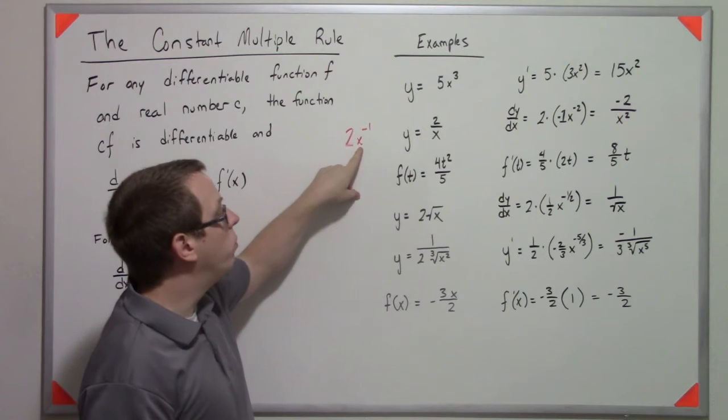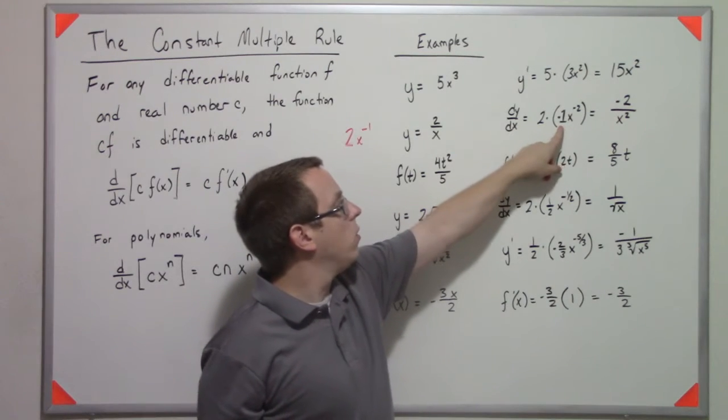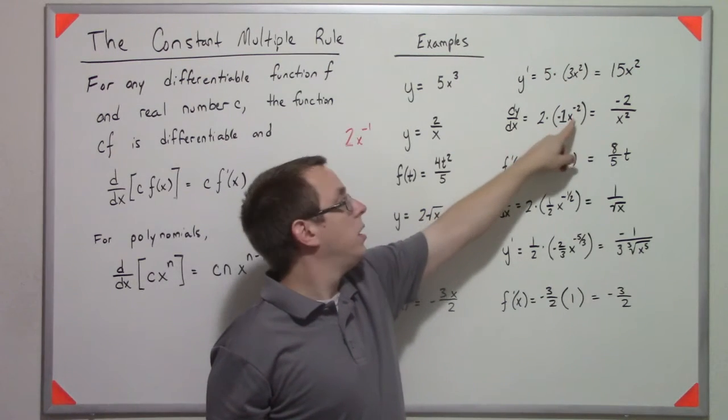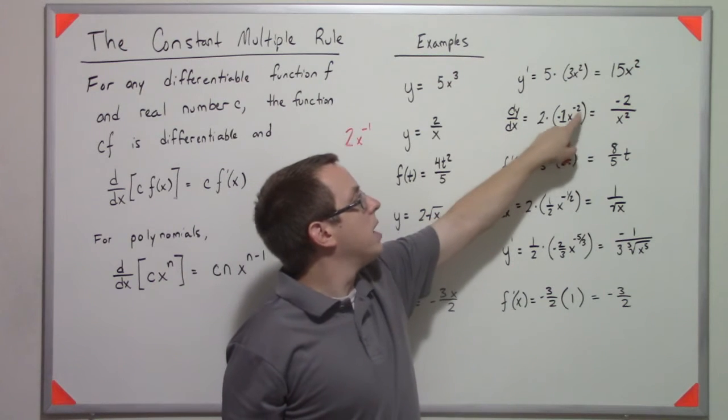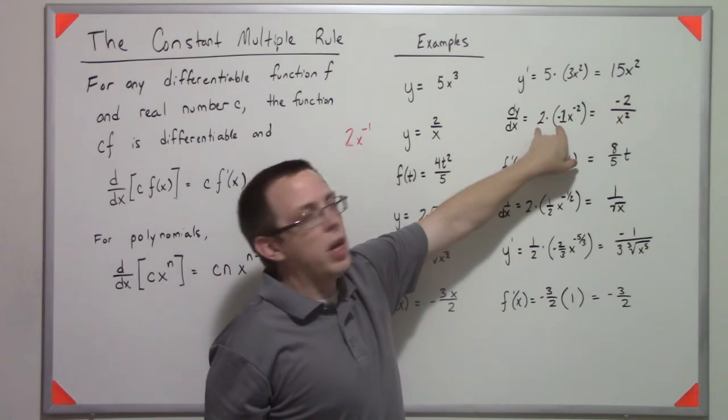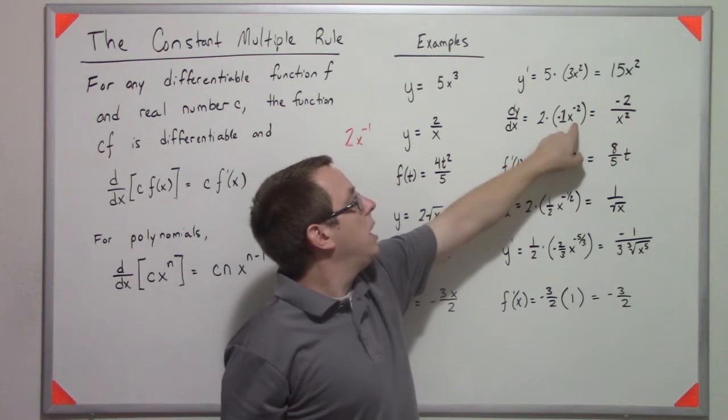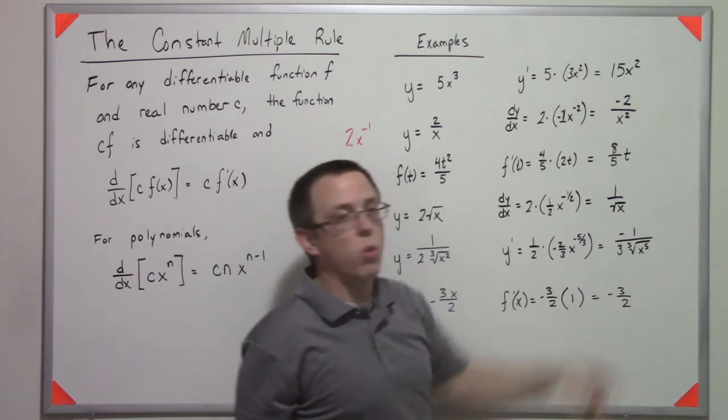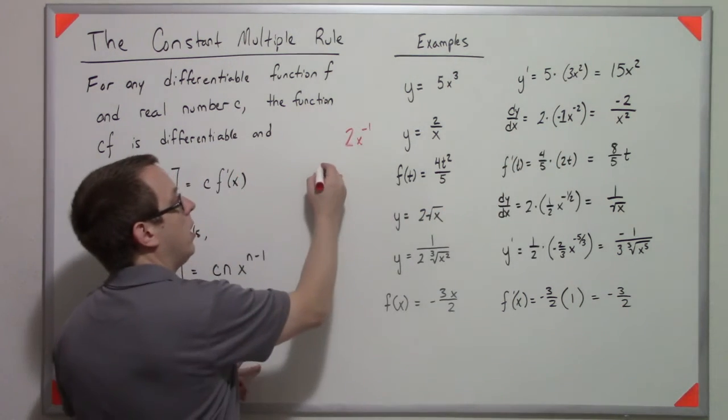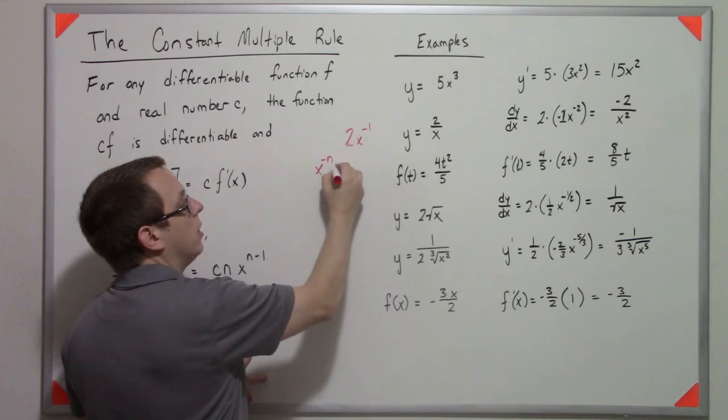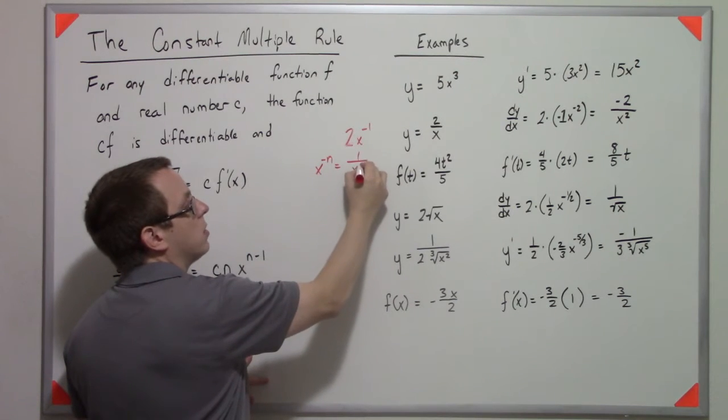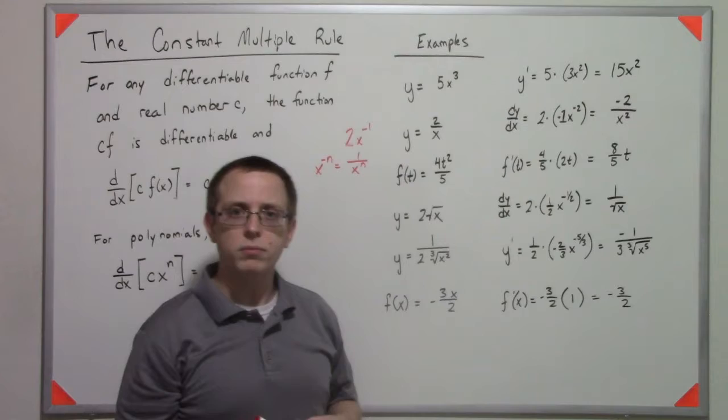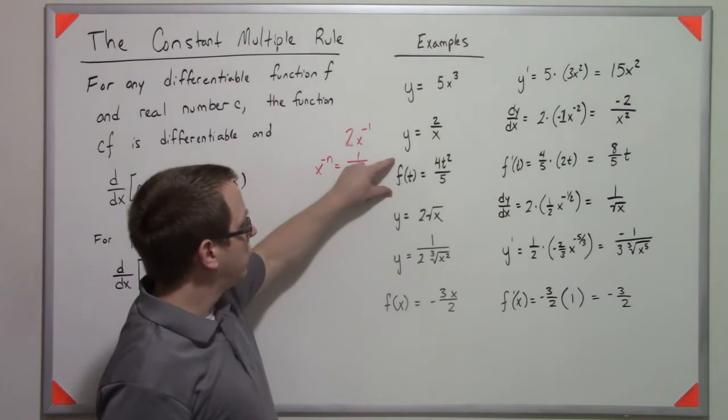So again, by the power rule, we bring the power down and subtract 1 from it. So we have negative 1 times x to the negative 2. These multiply together to get negative 2, and x to the negative 2 is 1 over x squared, because x to the negative n is 1 over x to the positive n.